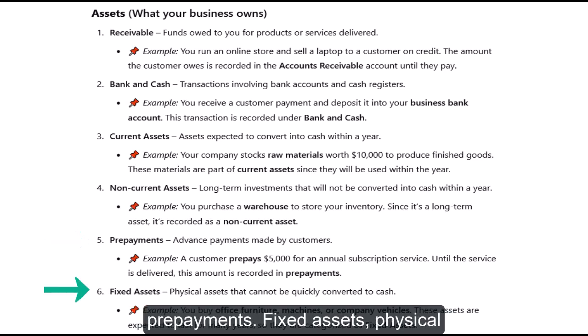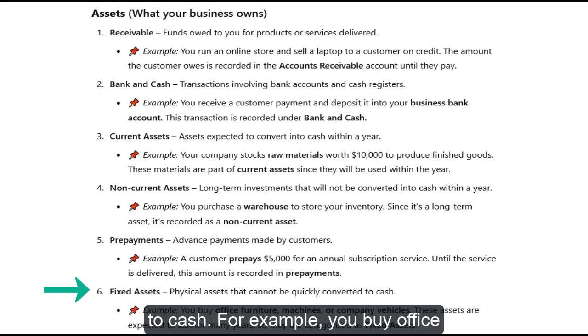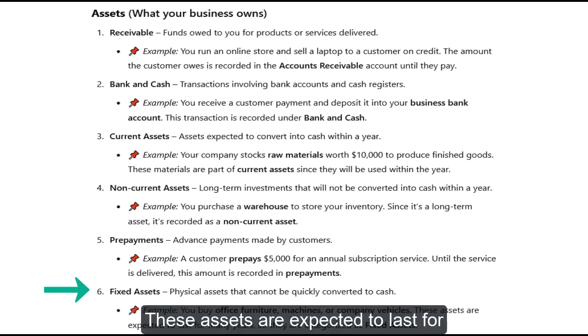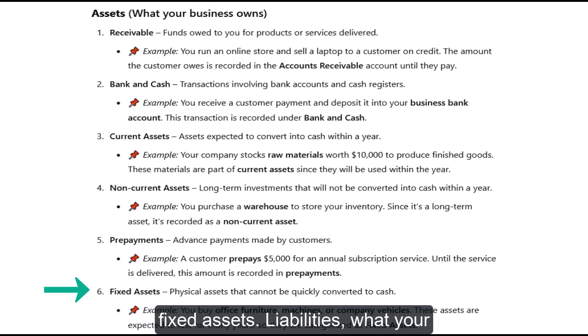Fixed Assets: physical assets that cannot be quickly converted to cash. For example, you buy office furniture, machines, or company vehicles. These assets are expected to last for many years, so they are categorized as fixed assets.